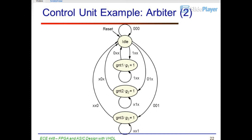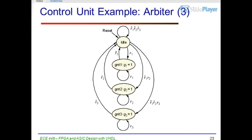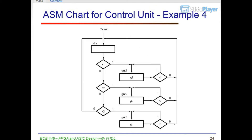Arbiter state table: State idle outputs 0,0,0. Transitions: R1R2R3 = 1XX goes to GNT1, XX1 goes to GNT2 — wait, 0X1 goes to GNT2, X01 to GNT2. GNT1 outputs 1,0,0; GNT2 outputs 0,1,0; GNT3 outputs 0,0,1 with transitions back to idle. ASM chart for control unit, Example 4.